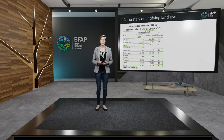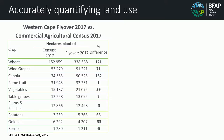Another point I want to raise is the point of quantifying land use. Here we are comparing the census of commercial agriculture in 2017 with the flyover data that was also done in 2017 in the Western Cape. And we see in some crops differences of up to more than 100% in terms of the area planted.